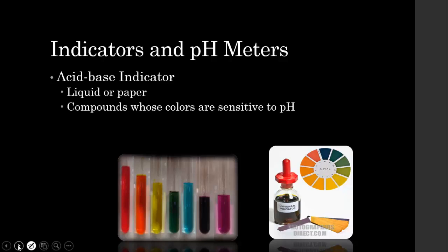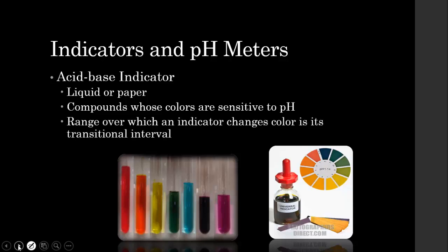Both of these substances are going to have compounds whose colors are sensitive to pH. So the color is going to tell us the strength of our acid or our base. The range over which an indicator changes color is called its transitional interval. That's how we're going to determine what the pH is.